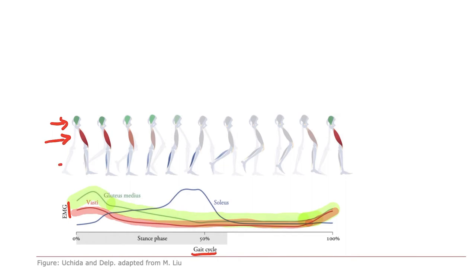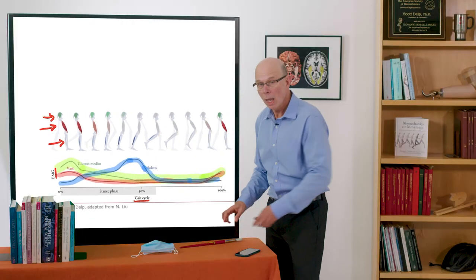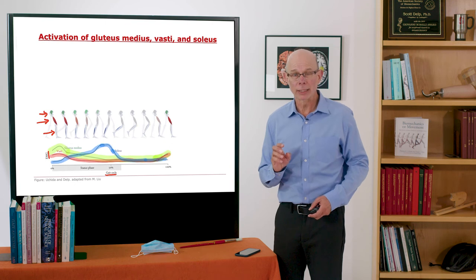Now soleus in the ankle, you see it's pretty much off at the beginning of stance. As stance proceeds the soleus becomes more and more active until it's very intensely activated right here in late stance. And you can see that in the EMG. Only lightly activated in early stance and then ramps up to high activation and then it shuts off rapidly during the swing phase. That's the activations of these muscles.